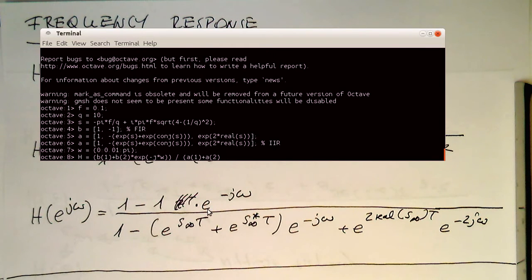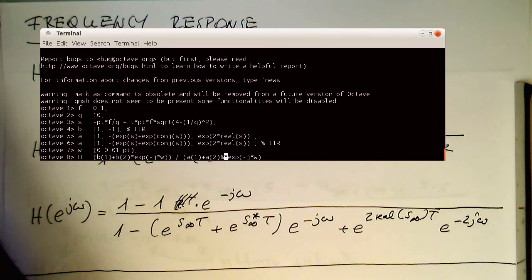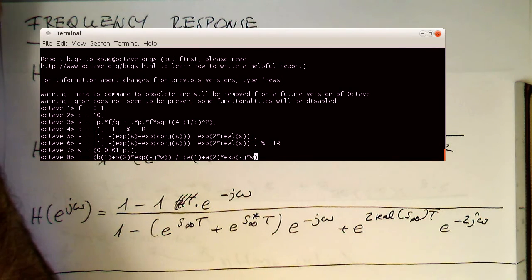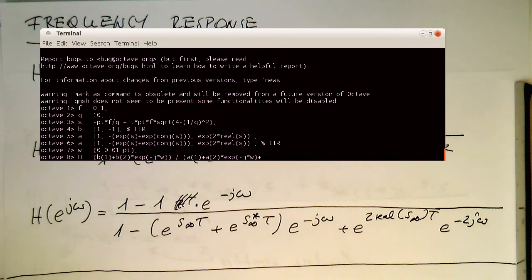And so then we add this up now with a of 2. A of 2 is this coefficient here which is sitting here. And we multiply this here with exp of minus j omega. So then we close the bracket here.